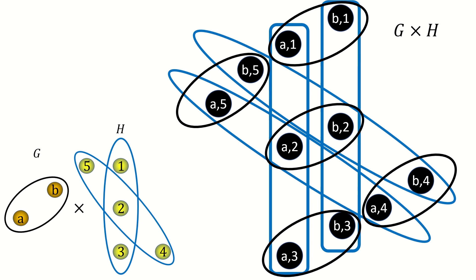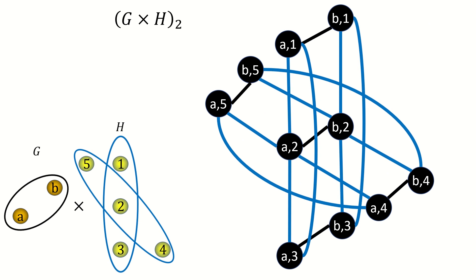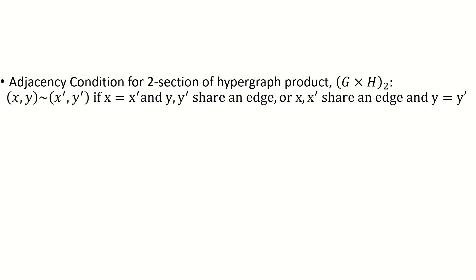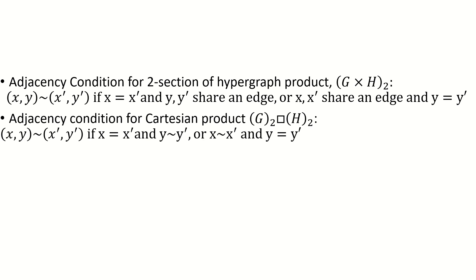Now watch what happens if we take the 2-section of this product, and then compare this 2-section to the 2-sections of the factor hypergraphs. The 2-section of the product is the graph Cartesian product of the 2-sections of the factor hypergraphs. This will be true in general, because vertices are adjacent in the 2-section when they share an edge in the hypergraph, and in the hypergraph product vertices share an edge precisely when their right coordinates share an edge and their left coordinates are the same, or their left coordinates share an edge and their right coordinates are the same. This adjacency condition is essentially the same as that for the Cartesian product of the 2-sections of the factor hypergraphs.